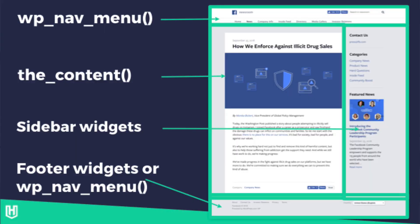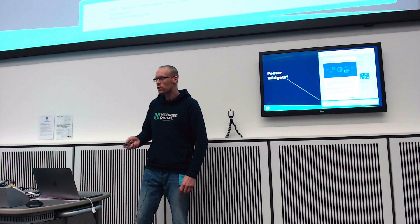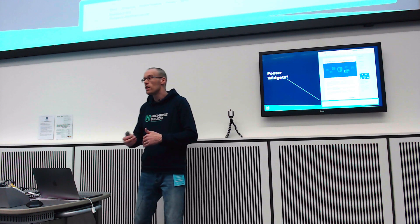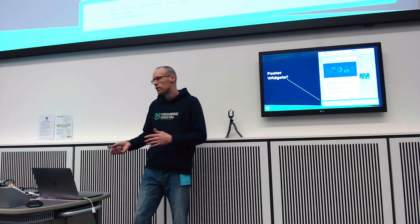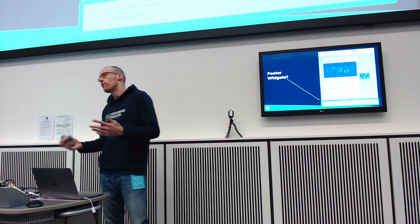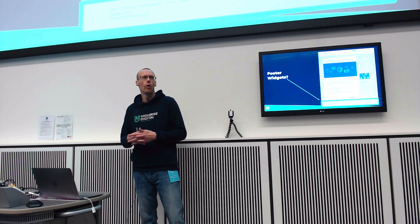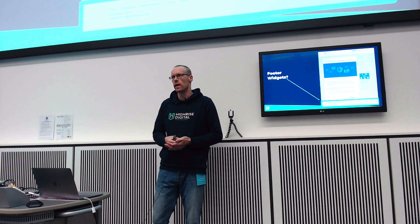And then it's got a footer — again, probably common on most websites even today. It has copyright information, a menu, and some other information. That was what we kept seeing as the traditional sort of layout of a website. Obviously designs made those different, sometimes very different, but those core areas of the page were sort of always there.